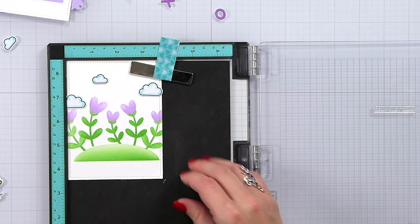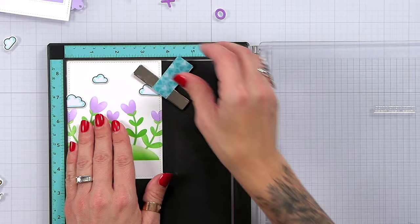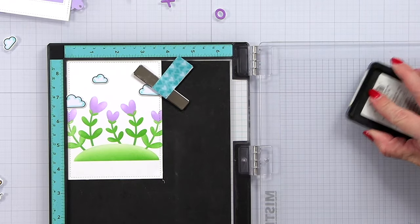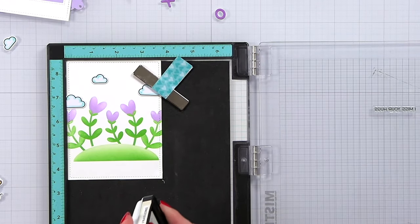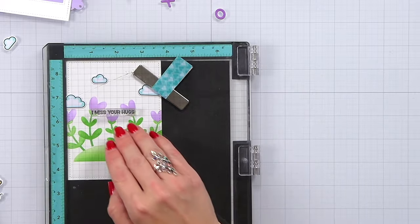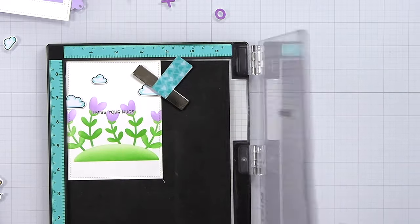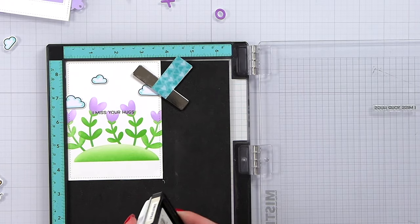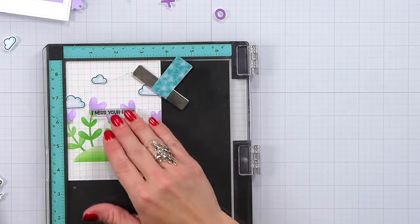So I will pick that up at the door of the MISTI, remove my ruler and make sure that I'm tucked up in that top left hand corner and then I'm going to ink up this small sentiment using the black licorice ink. I will stamp that down twice to make sure I have a really nice impression.